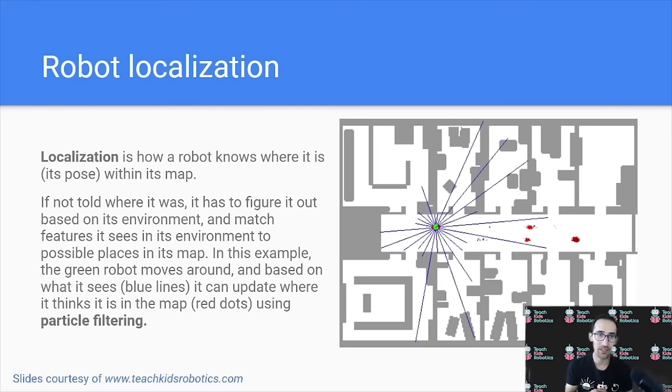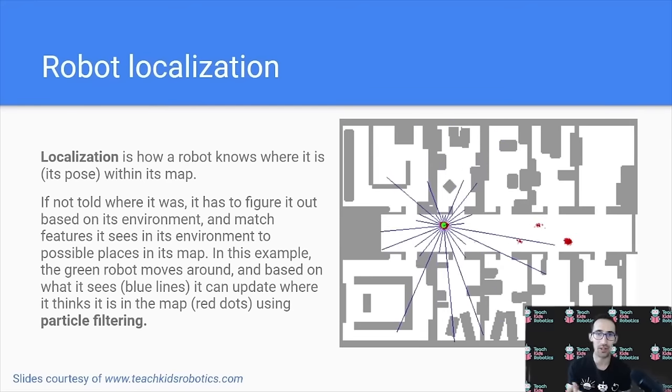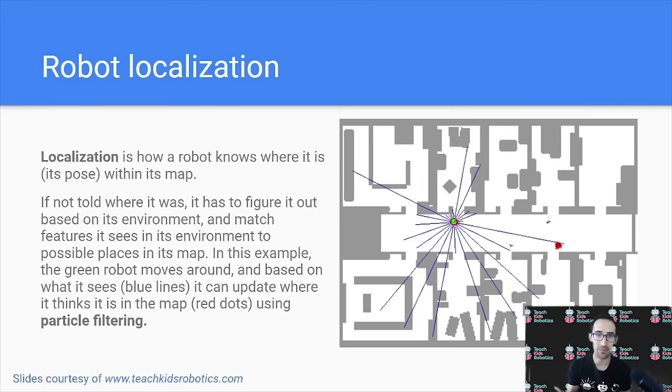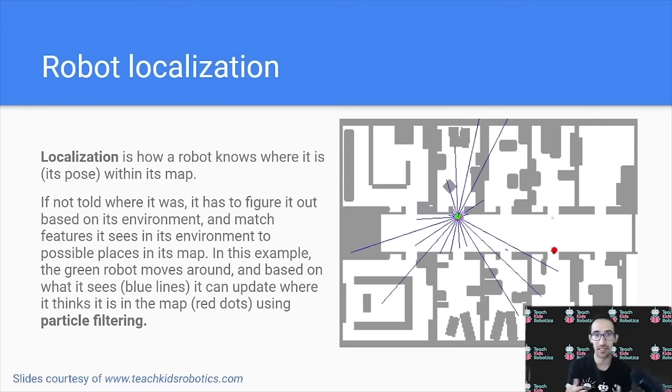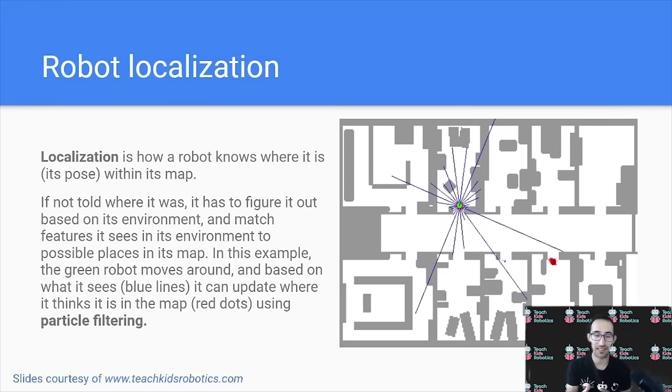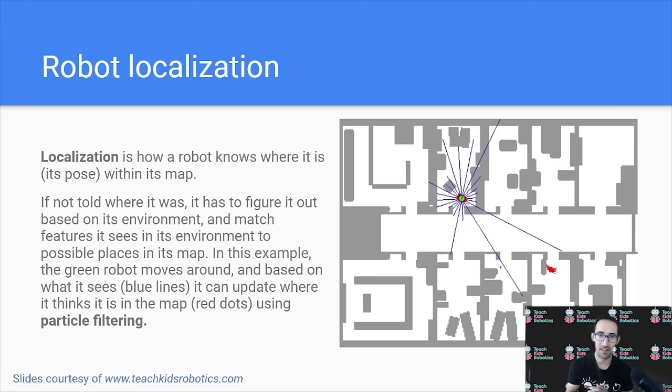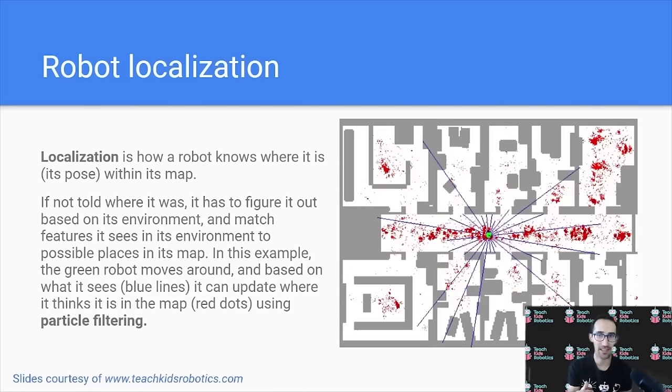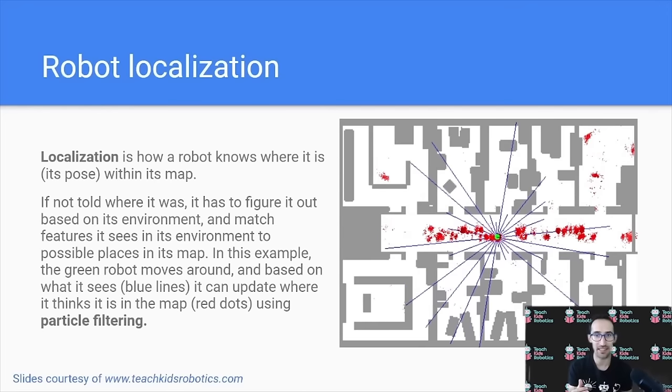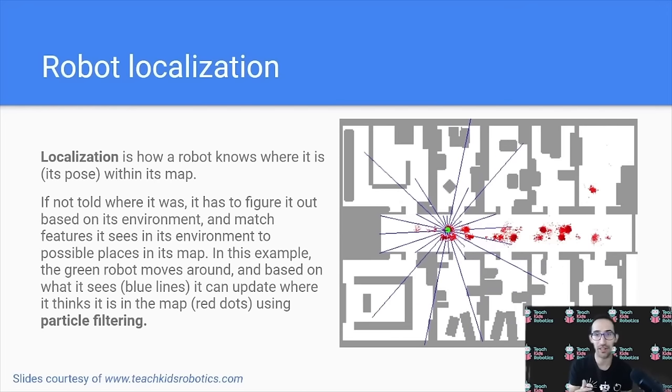Now, the term we use to refer to how a robot knows where it is, or where a robot is in its map that it's created, is localization. Now localization is going to give us basically the information about where a robot is what its pose is inside of the map. Now you can think of this as a problem where if we were to blindfold someone and put them in a room and then take the blindfold off, it would take them a few seconds to look around the room and understand where exactly they are based on things they see, such as signs or windows, to figure out where they are in a building.